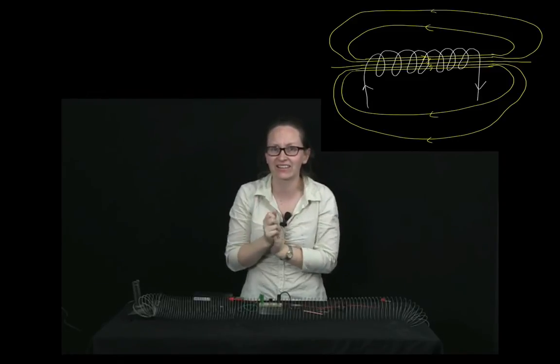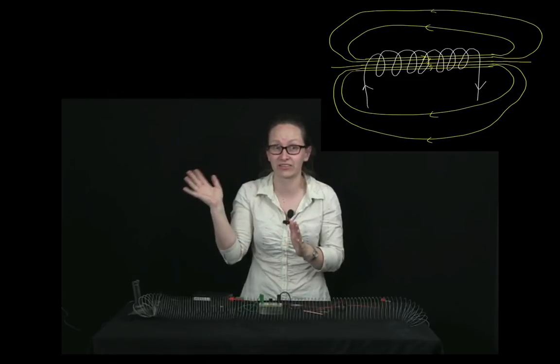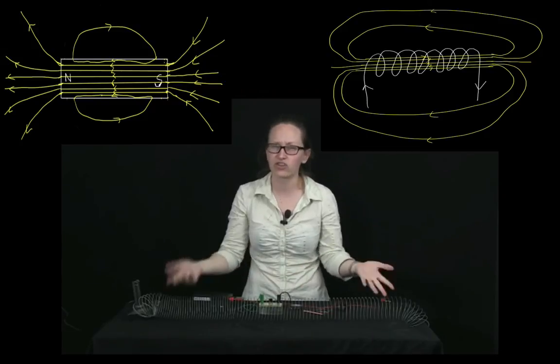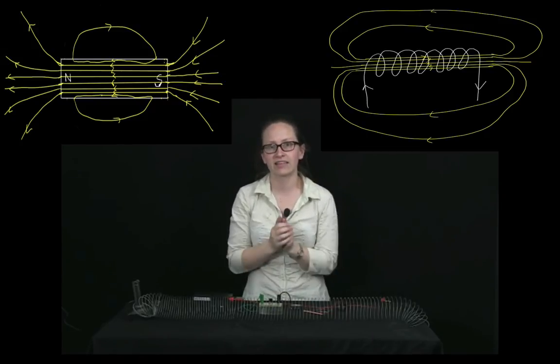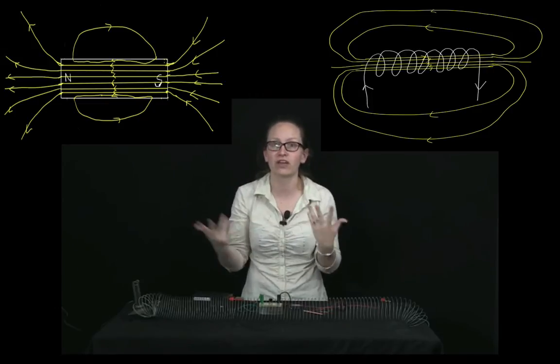This is actually exactly the same as the magnetic field lines around a permanent magnet looked like. And so, this means that a solenoid like this is actually a very useful device, as it can be used as a permanent magnet that can be turned off and turned on.